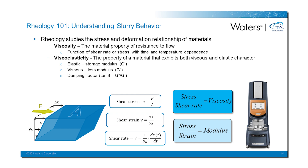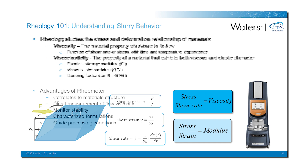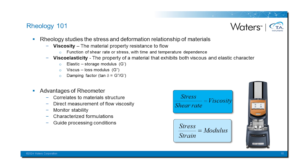The rheometer applies a force to the sample, which is displaced a certain amount (delta X) at a certain rate. From the force, displacement, and displacement rate, we calculate shear stress, shear strain, and shear rate respectively. Viscosity is the ratio of shear stress to shear rate, and modulus is the ratio of shear stress to shear strain. Advantages of the rheometer include correlating rheological behavior to material structure, directly measuring flow viscosity, monitoring stability, characterizing formulations, and guiding processing conditions.